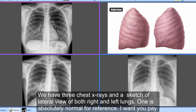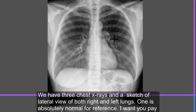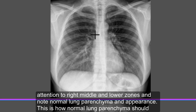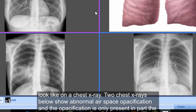We have three chest X-rays and a sketch of a lateral view of both right and left lungs. One is absolutely normal for reference. I want you to pay attention to the right middle and lower zones and note normal lung parenchyma in appearance. This is how normal lung parenchyma should look on a chest X-ray.